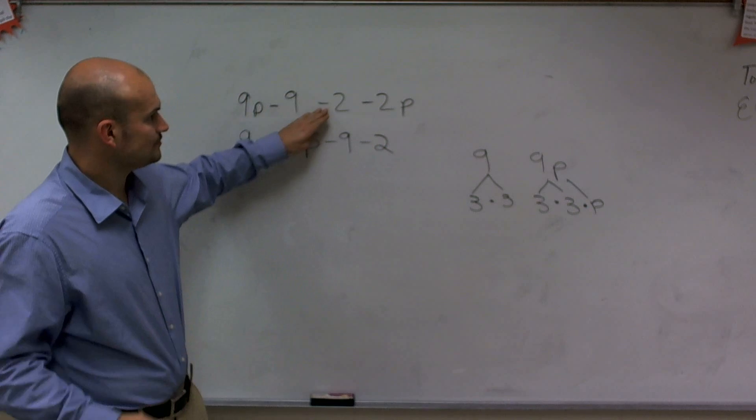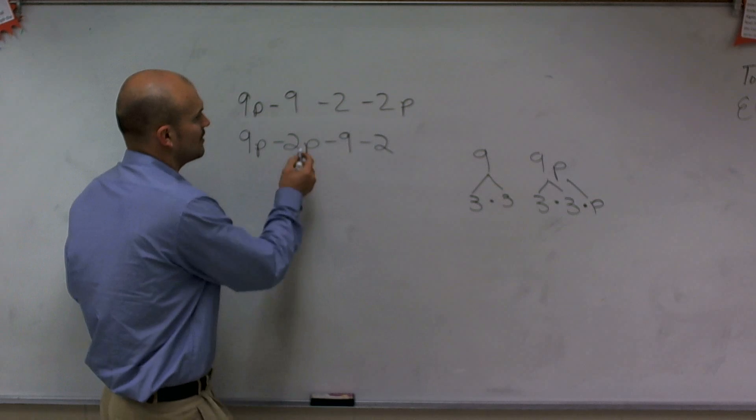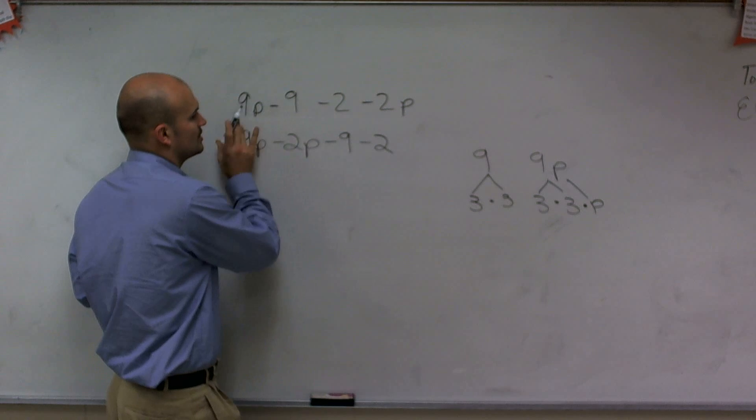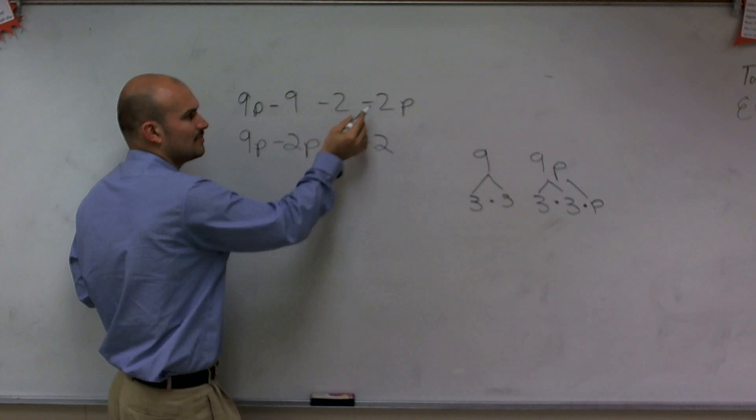Notice how I took—or actually, not the associative property, but the commutative property. Notice how I took the signs of each one of those and just rearranged the negative 2p in front, but it's still negative.